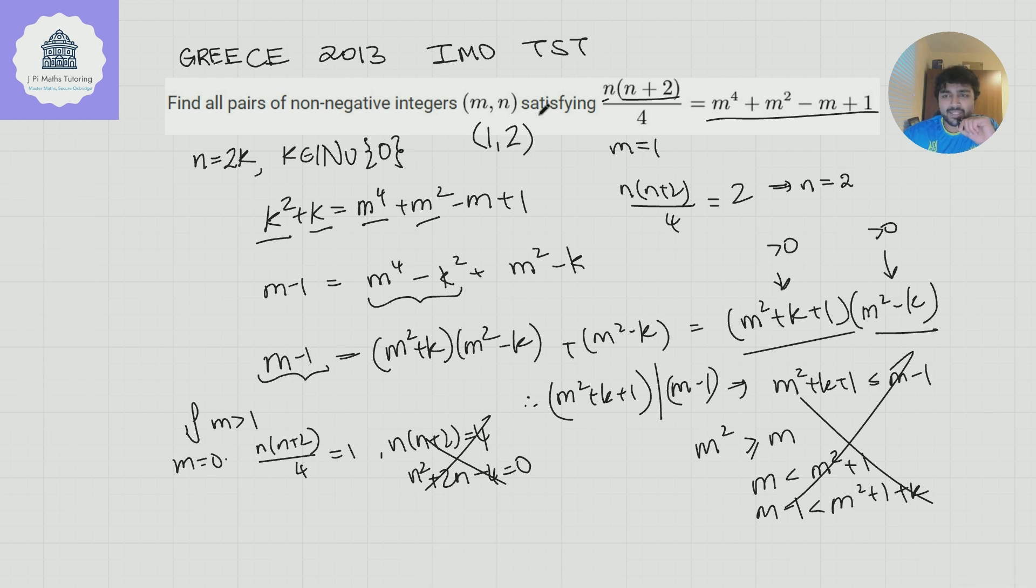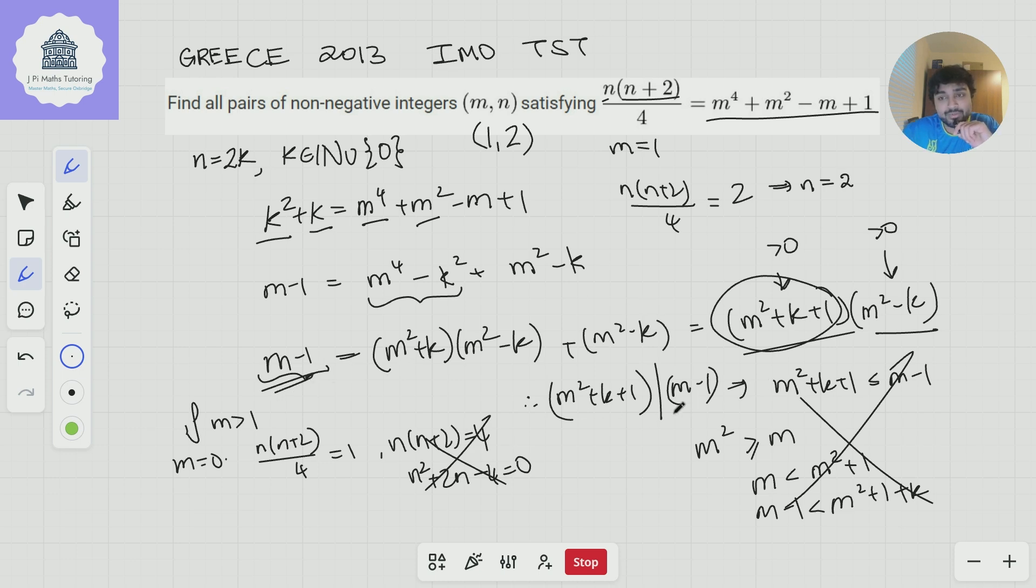A pretty neat solution here. So just briefly going over this again, we firstly observe that n has to be even. Then replacing it with 2k, we get this equation, which if we bring terms to one side, factorizes quite nicely. And then because everything here is an integer, we know that this term must be a factor of m - 1, but it therefore in particular must be smaller than or equal to it. But then that's a contradiction if m is bigger than 1. So that means we only need to test two cases, which is pretty straightforward to do. Anyway, thanks so much for watching. I'll catch you in the next one. Have a great day.